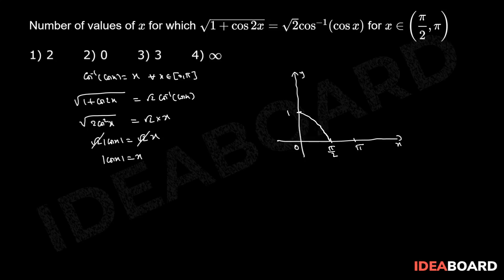Now this is the graph of |cos x| in the interval 0 to π. Now, suppose this is the line y = x.